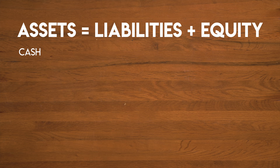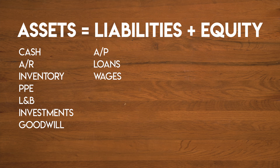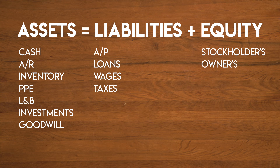Assets can include things like cash, accounts receivable, inventory, plant, property and equipment, land and buildings, investments and goodwill. Whereas liabilities can be made up of accounts payable, loans payable, wages payable and taxes payable, amongst other things. The most common forms of equity are stockholders' or owners' equity and retained earnings.